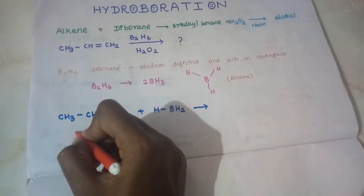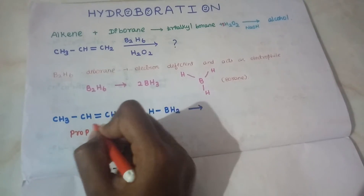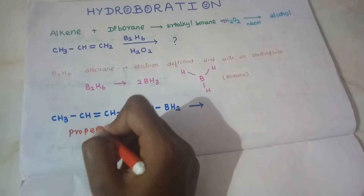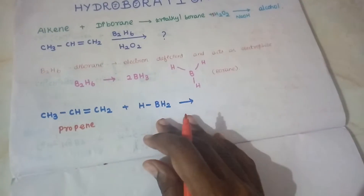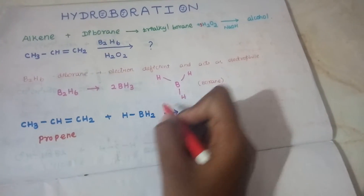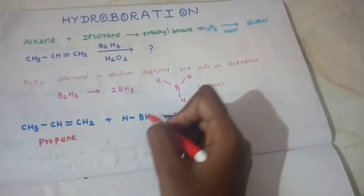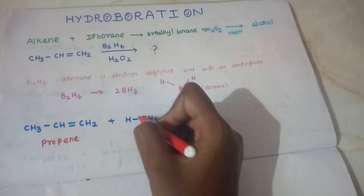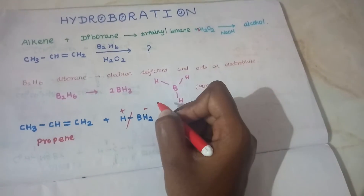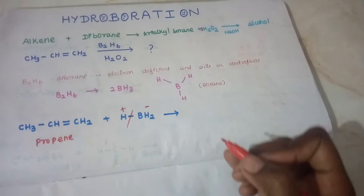Let's do the reaction. This is propene — it has three carbons. The borane dissociates, and H is positive while boron is negative. This follows anti-Markovnikov's rule.